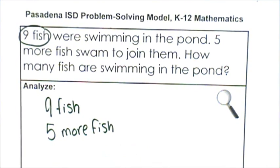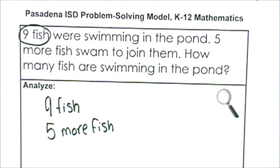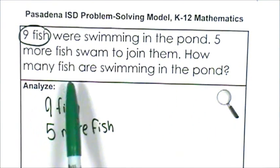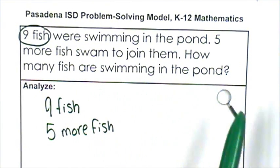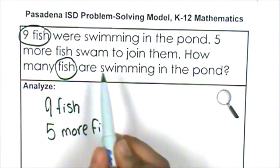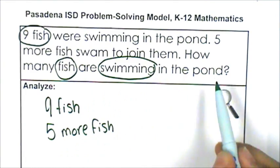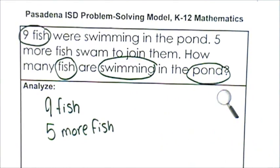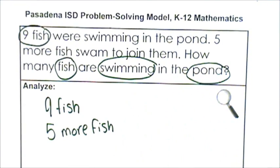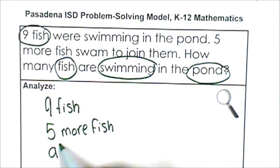What is the problem asking me to find? Let me go to my question. How many fish are swimming in the pond? Oh, it wants to know about the fish that are swimming in the pond. Not the fish at my cousin's house. Not the fish that were jumping. Not the fish that were eating. But the fish that were swimming in the pond. All of the fish.